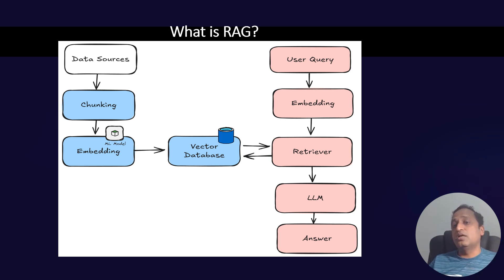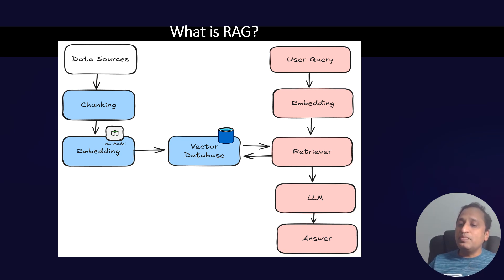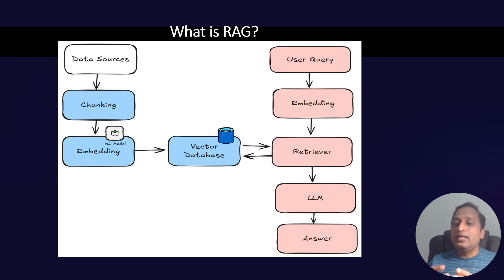Consider sentences like 'the sky is blue' and 'clouds float in the sky' — their embeddings will be similar because they share related meaning. This is what allows AI to retrieve relevant information efficiently. These embeddings are stored in a specialized vector database such as Pinecone or ChromaDB, making it easy to retrieve similar information later. When a user asks a question, it undergoes the same embedding process — the query is converted into an embedding and the most similar embeddings are retrieved.